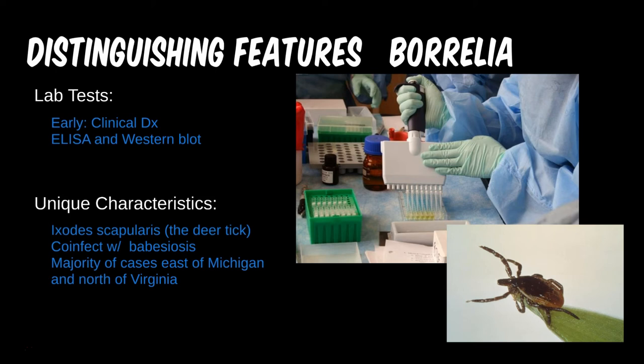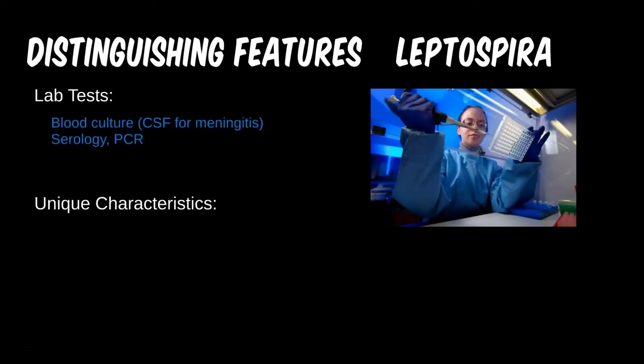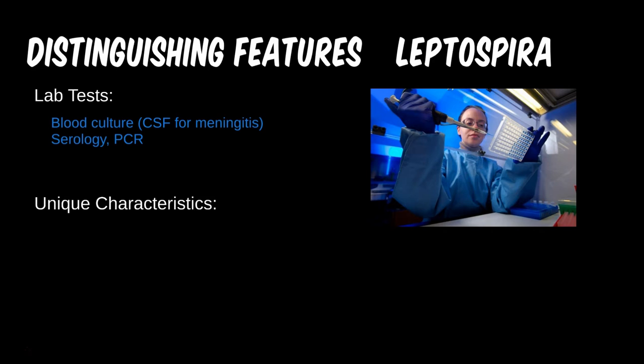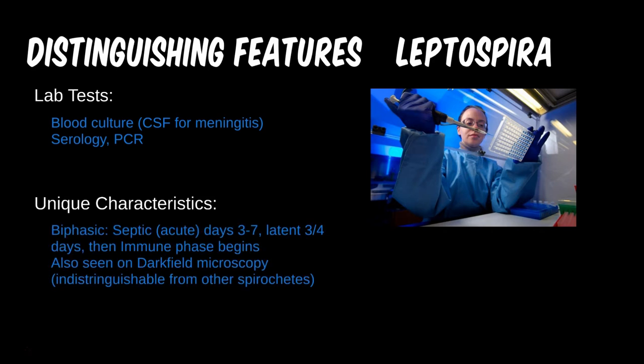Now we can finish off this tier with a much simpler bug, Leptospira. Lepto can sometimes be cultured by a simple blood culture or fluid from infected tissues. However, serology and PCR have become more versatile and more commonplace in past years. An interesting but not really testable characteristic is the biphasic nature of Leptospira. The first few days seem like a severe flu, which may present as sepsis. After about a week, when immune globulins are detected via serology, begins the immune phase and other potential sequelae. In general, this microbe is pretty low yield.